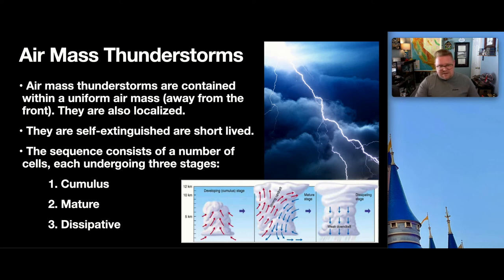The image down below, we'll spend some time, in a moment, discussing each one of these stages, but we can see the developing or cumulus stage. Then, we have the mature stage, in which we now have precipitation occurring, and then the dissipating stage, which is when the air mass thunderstorm itself begins to run out of fuel and kind of puts itself out. So, let's talk about each one of these.